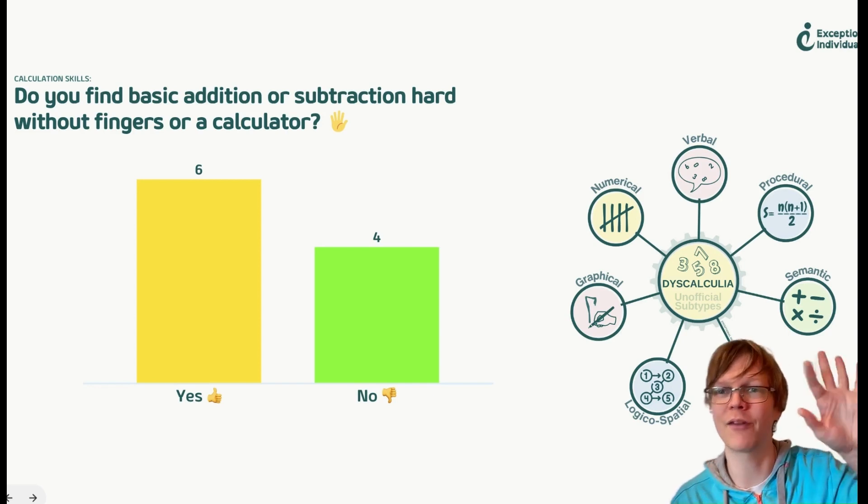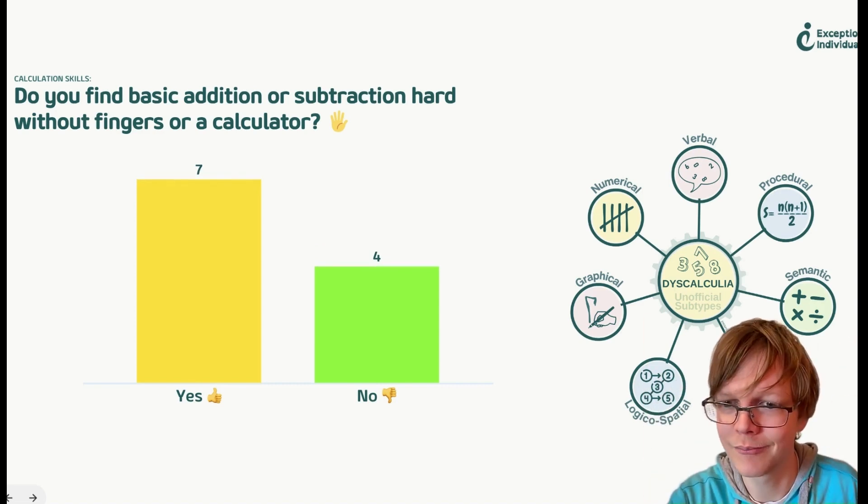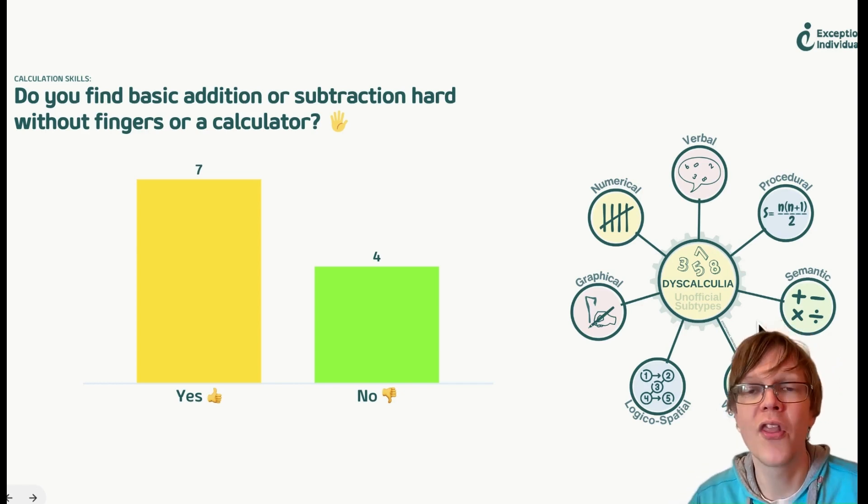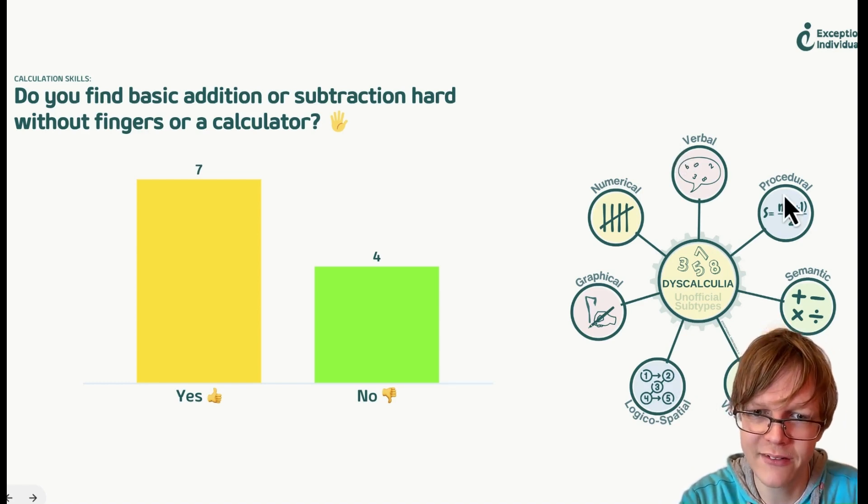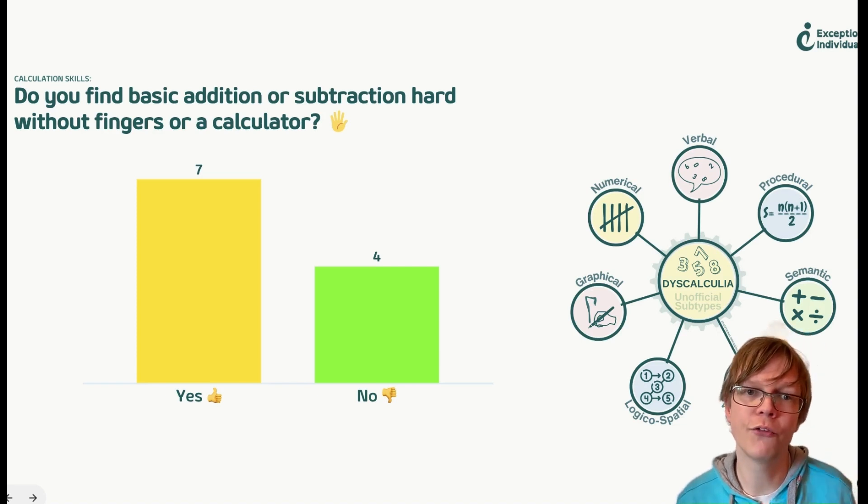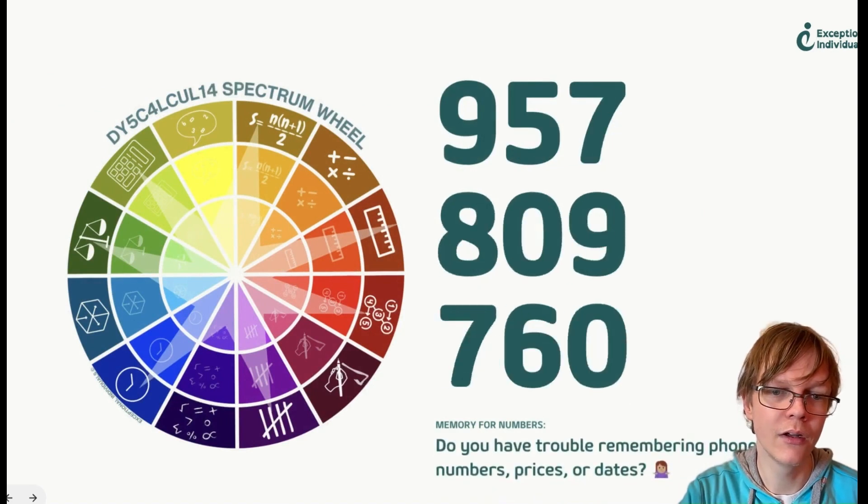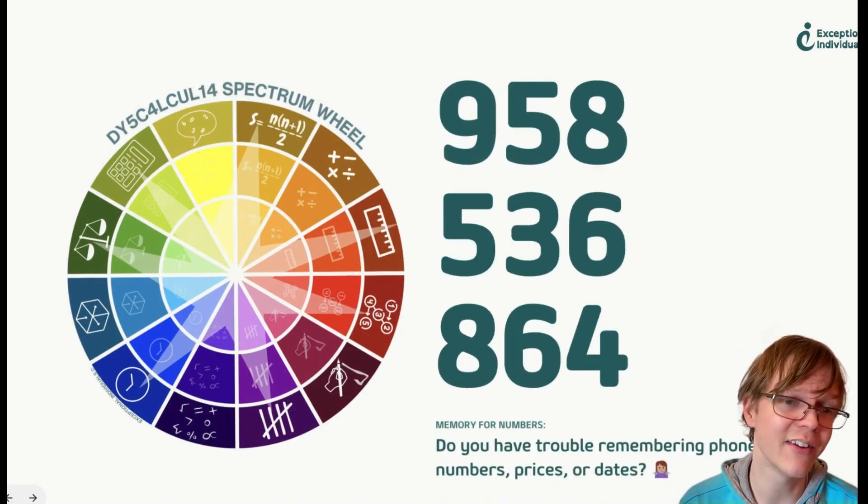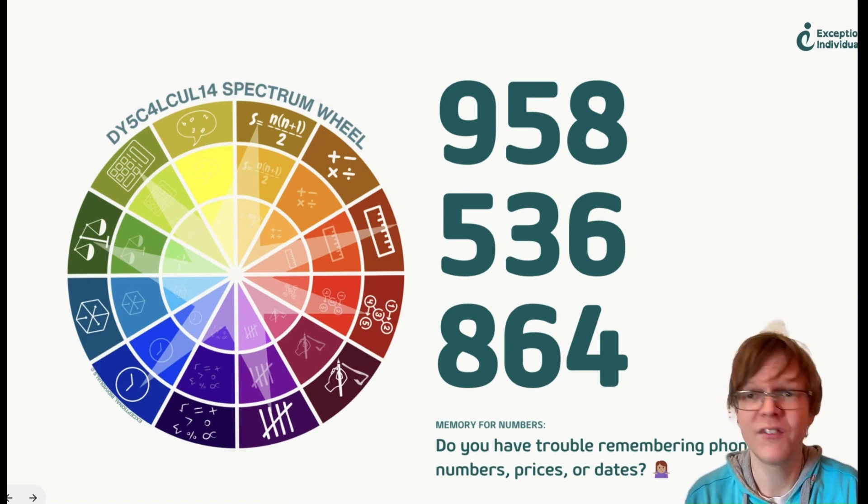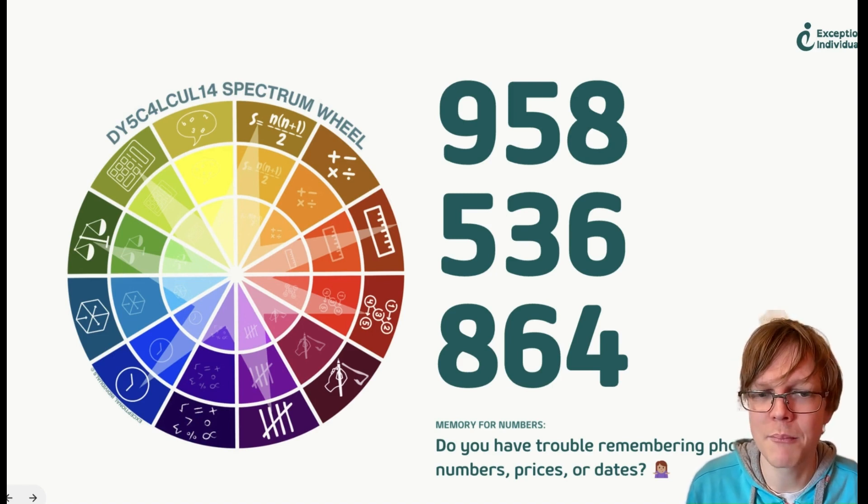When I was younger, I used to literally get my feet out to count them as well. This is an example of the unofficial subcategories of dyscalculia: verbal, somatic, visual spatial, logical spatial, graphical, numerical. None of these are official, but they are useful in understanding how your brain processes numbers and what areas you may want to put a little bit more focus on.